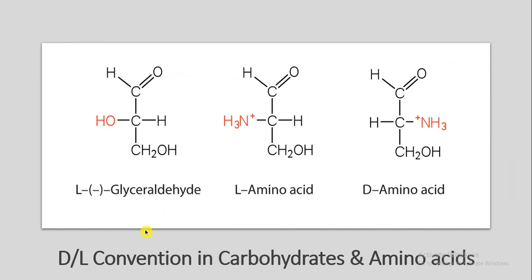DL convention in carbohydrates and amino acids is applied the same way. In amino acids, if the amino group is on the right side in the Fischer projection, it is a D amino acid; if on the left side, it is an L amino acid.